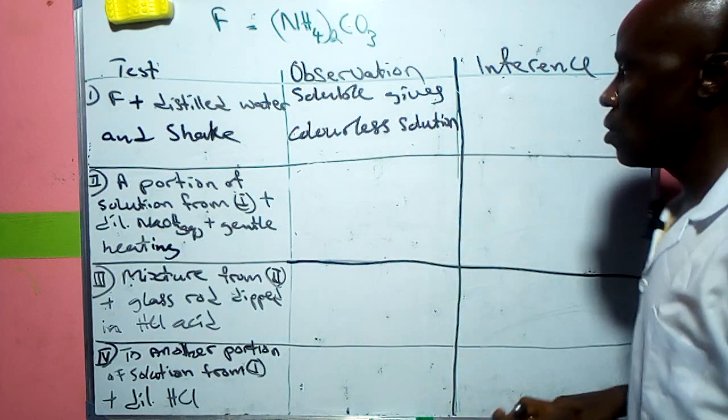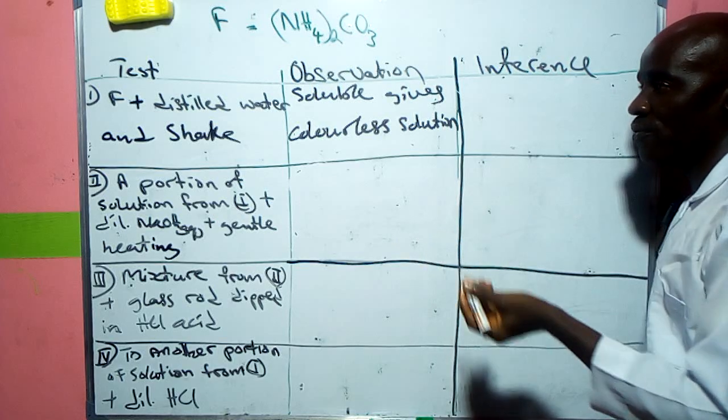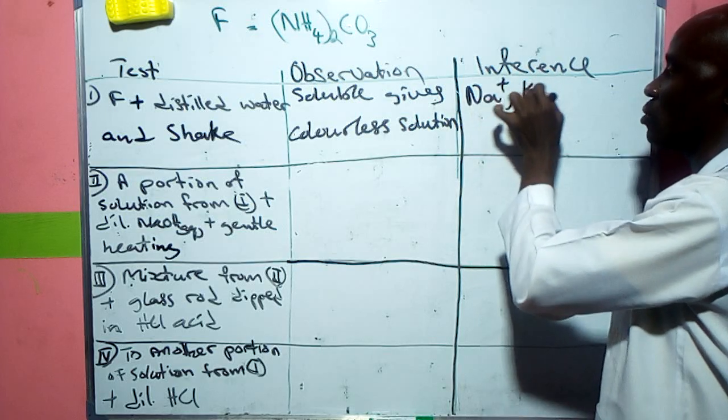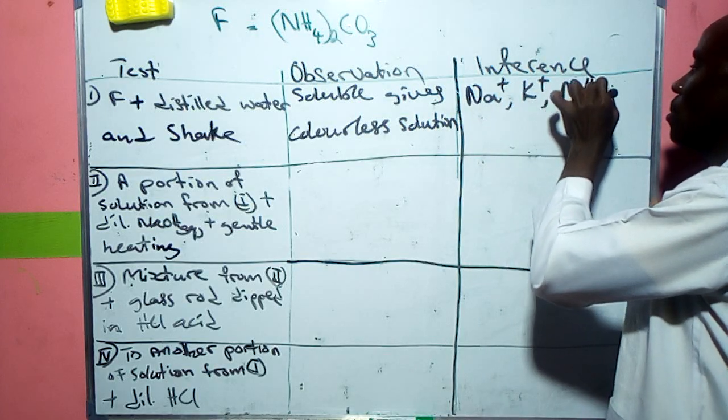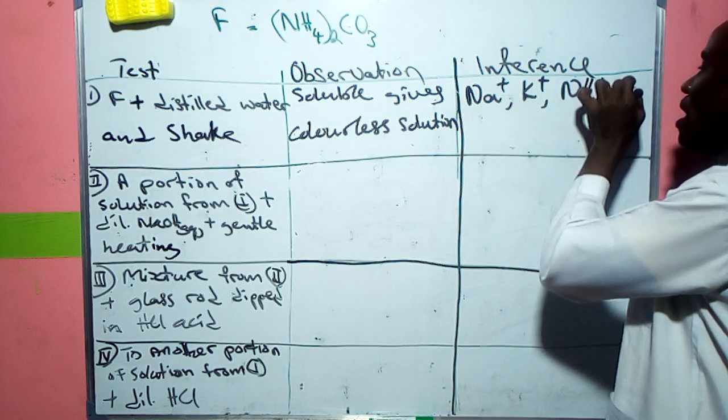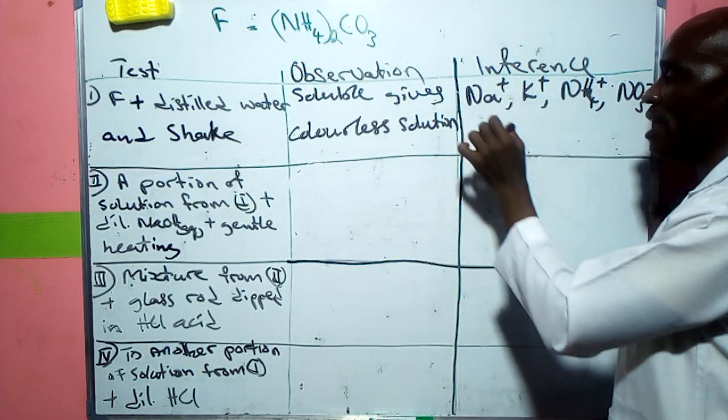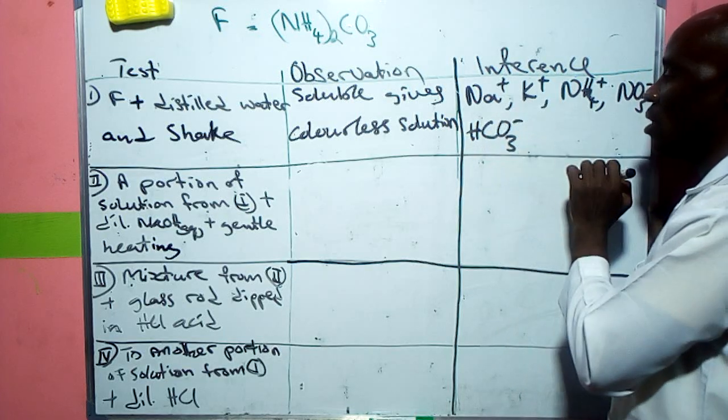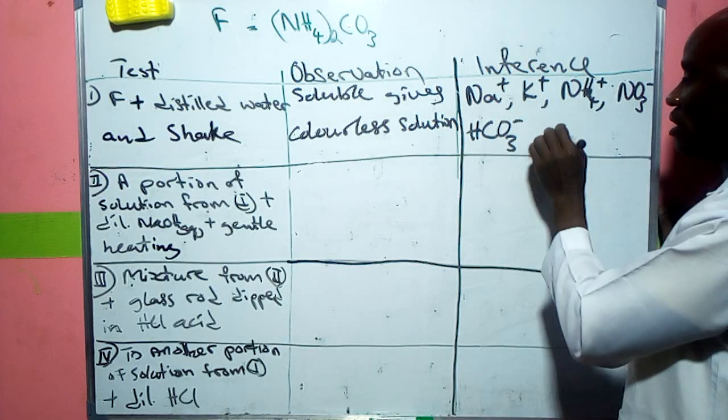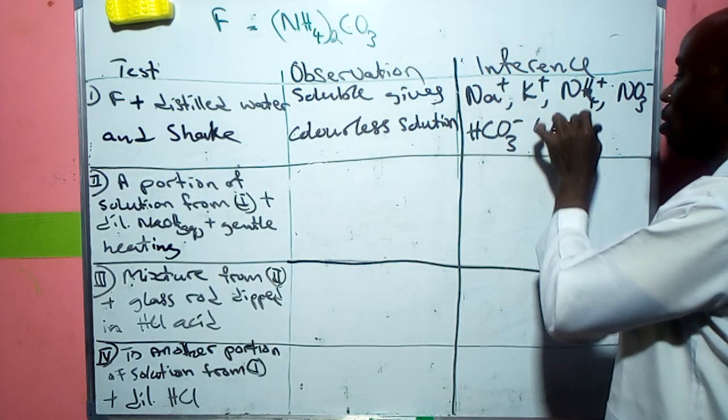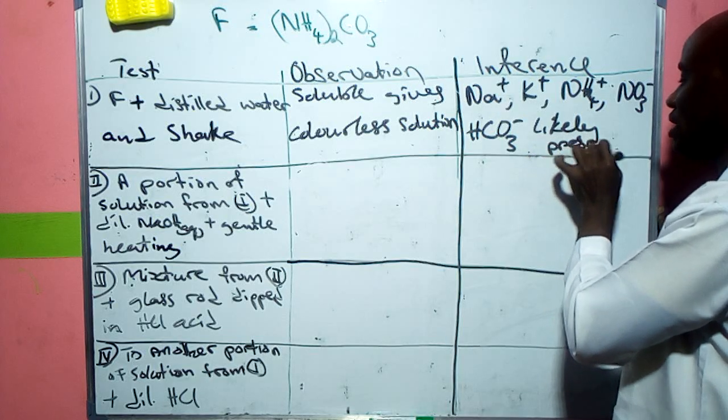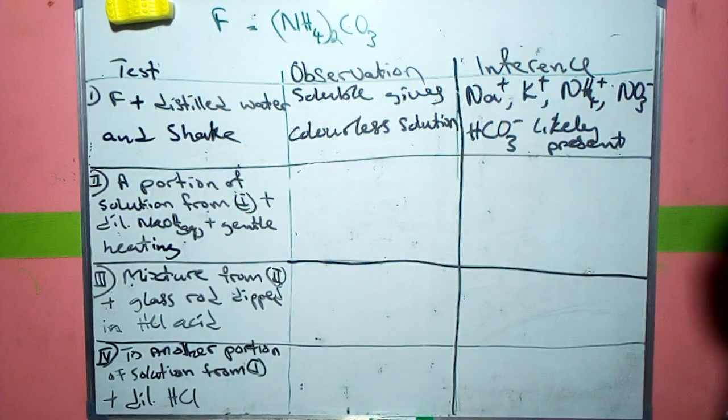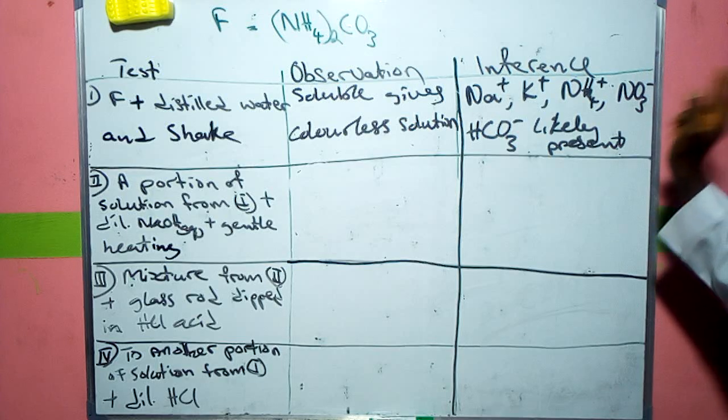The possible ions that will give us soluble in every case: sodium ion, potassium ion, ammonium ion, trioxo nitrate V ion, and hydrogen trioxo carbonate ion. All these ions are soluble in all cases, so we say that these are likely present because we don't really know the exact one that we're looking for.